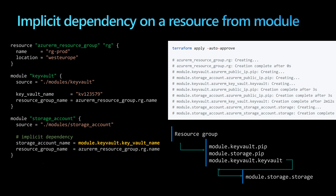In the third experiment, we have an implicit dependency on a specific resource from a module. We still have the resource group, the first module, and the second module. What changes is that the storage account name will reference an output value from the first module, named key vault name.